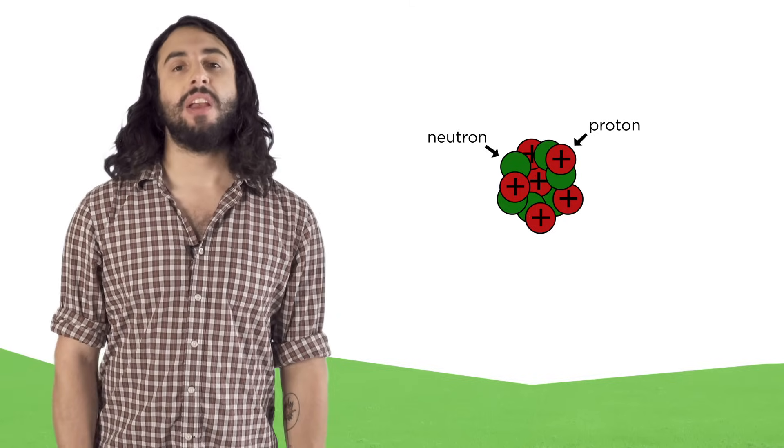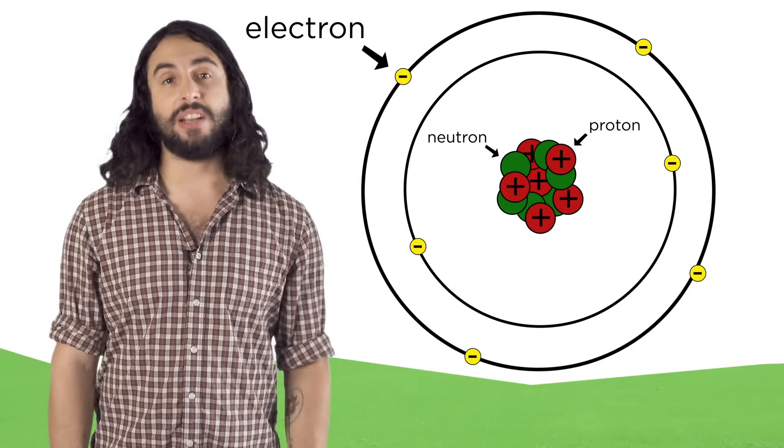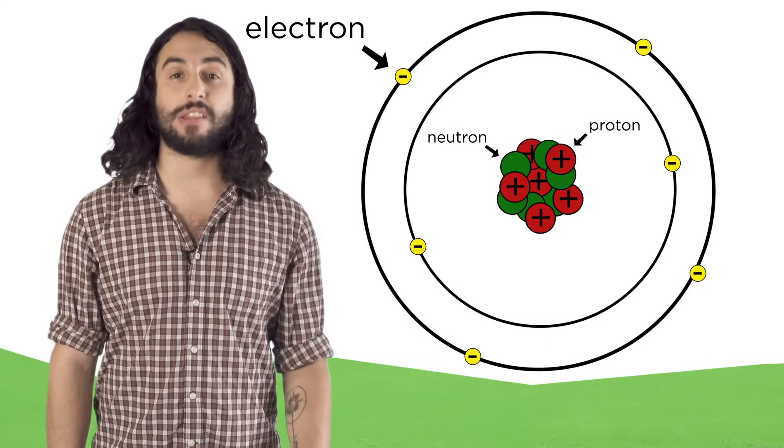We know that atoms have a tiny nucleus with positively charged protons and neutrons which have no charge, as well as negatively charged electrons that are some distance away from the nucleus. Every element is a combination of some number of these three particles.